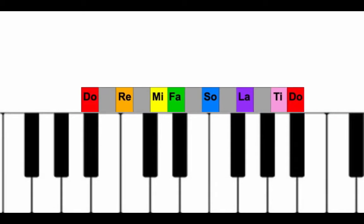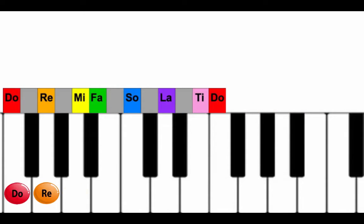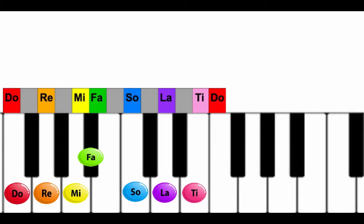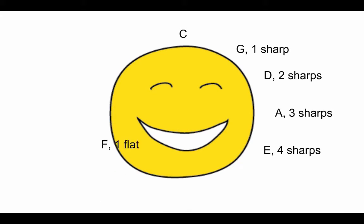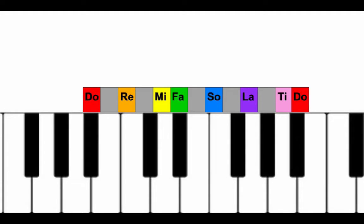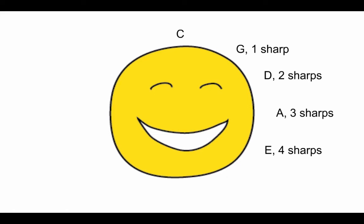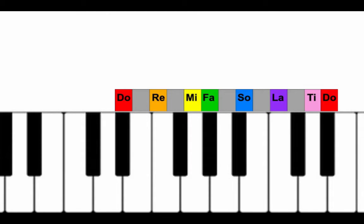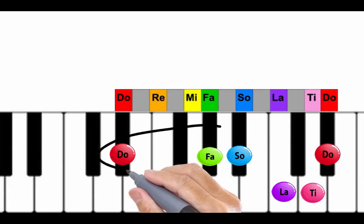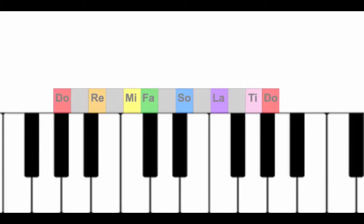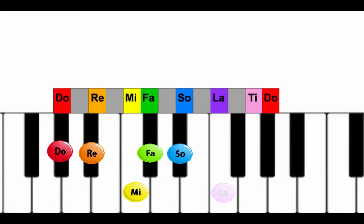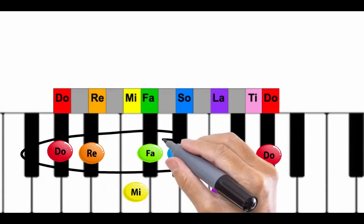So we're going to go left on our circle of fifths now. We have C major. Go down a fifth to F major. F major has one flat. Now go down a fifth again to B flat major. B flat major has two flats. Go down a fifth to E flat major. E flat major has three flats. Go down a fifth to A flat major. A flat major has four flats.